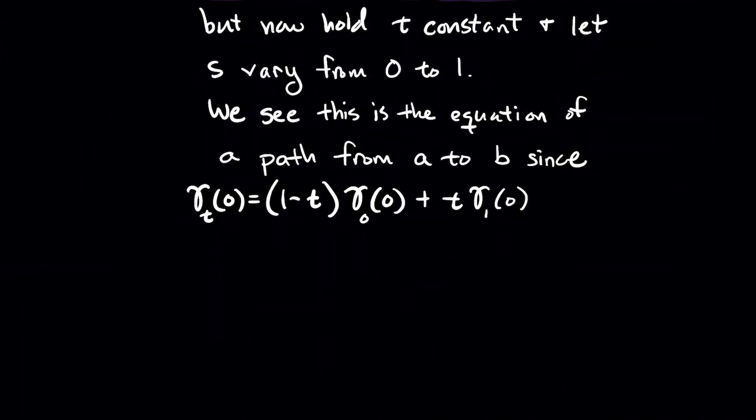So we need to make sure that when I plug in zero, I get a. And so let's think about when we plug in zero for s, gamma naught of zero is a, and gamma one of zero is also a, right? The two paths start at the same point. And if you just distribute and combine like terms, you see that works out to a. So that's good news.